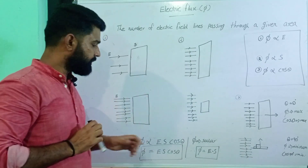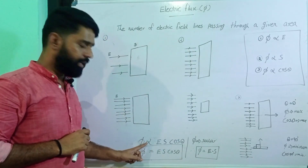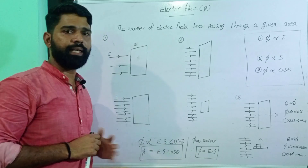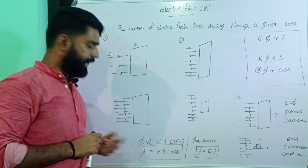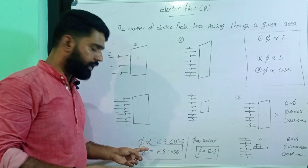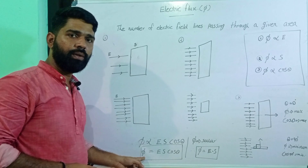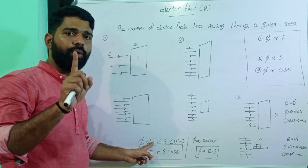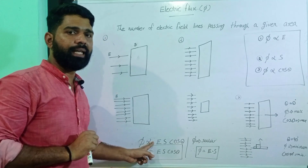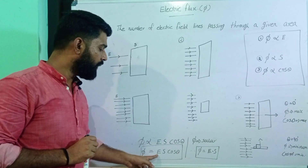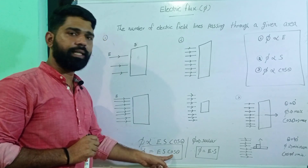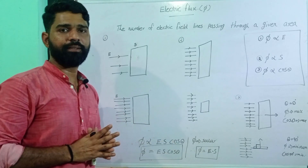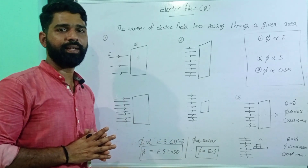We can write phi is proportional to E and also proportional to S cos theta. Combining with a constant value of one, phi is equal to E S cos theta. Therefore, electric flux phi is equal to E dot S.